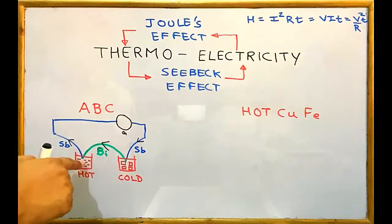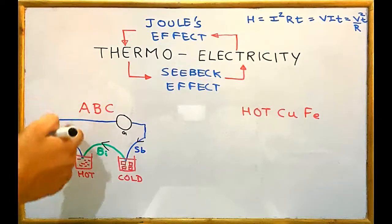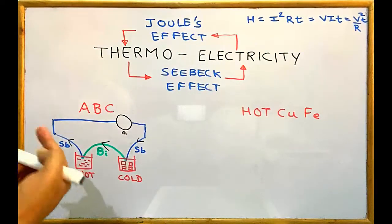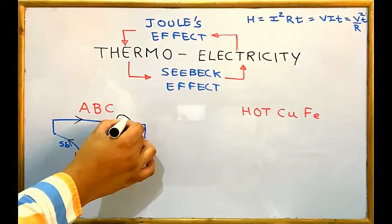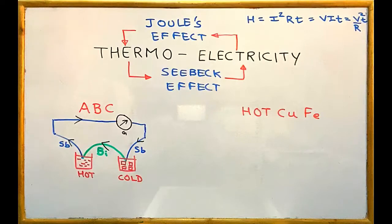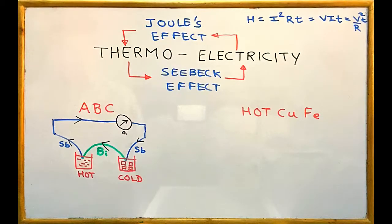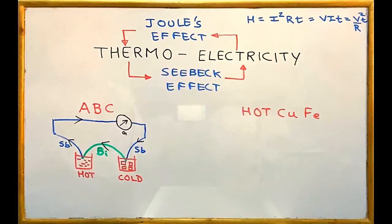At the hot junction the current is from bismuth to antimony — which would be BAH — but ABC is easier to remember: antimony to bismuth at the cold junction. The galvanometer pointer deflects to the right. Just to clarify, the indirect turbine method generates electricity at a large scale for commercial and residential use, but thermoelectricity is not meant for that. It is mainly used to detect a temperature change.